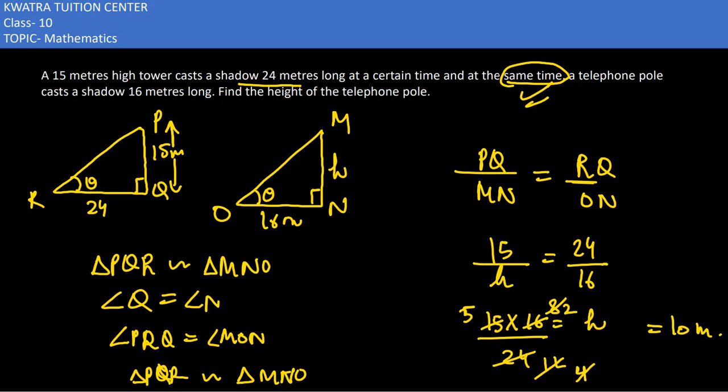So the telephone pole height would be 10 meters.